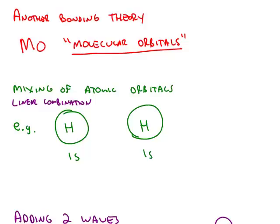Hybridization is a useful bonding theory. However, it does not explain the bonding in every chemical. Another theory is called molecular orbital theory.